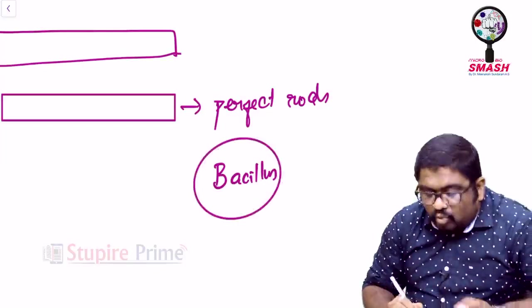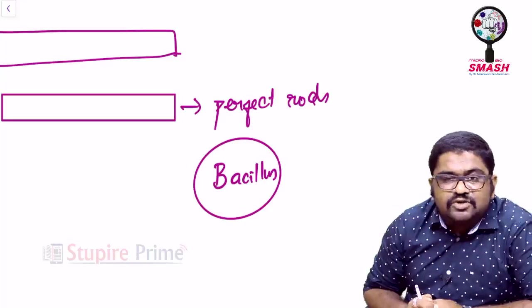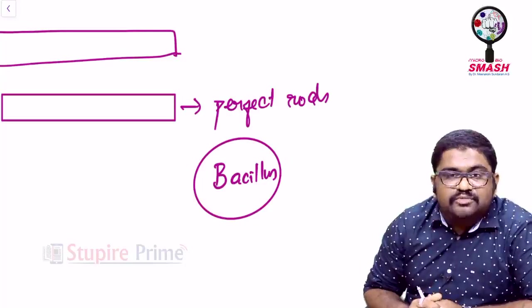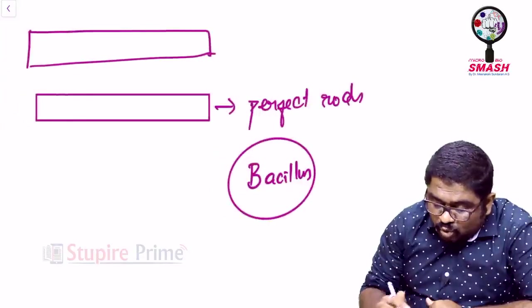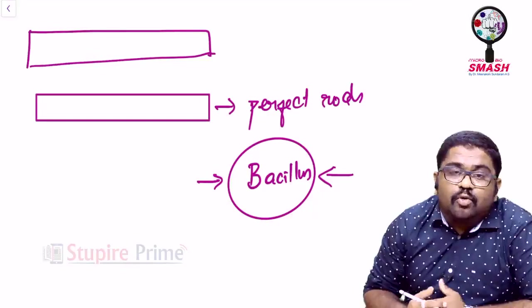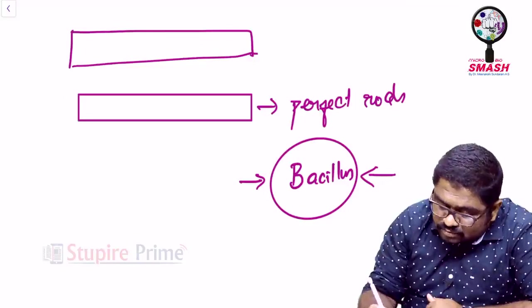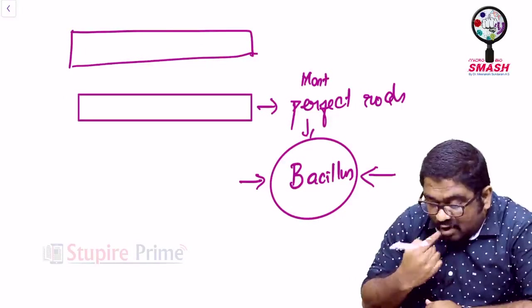If I ask you, what group of organism is Clostridia? Clostridia are also bacilli. Bacillus, that is also bacilli. E. coli, that is also bacilli. Salmonella, that is also bacilli. But only one genus called as bacillus is getting the name of bacillus itself for being a rod. Why? Because the world's most perfect rods ever belong to bacillus. And among bacillus, you have organisms like Bacillus anthracis, Bacillus cereus, Bacillus thuringiensis.